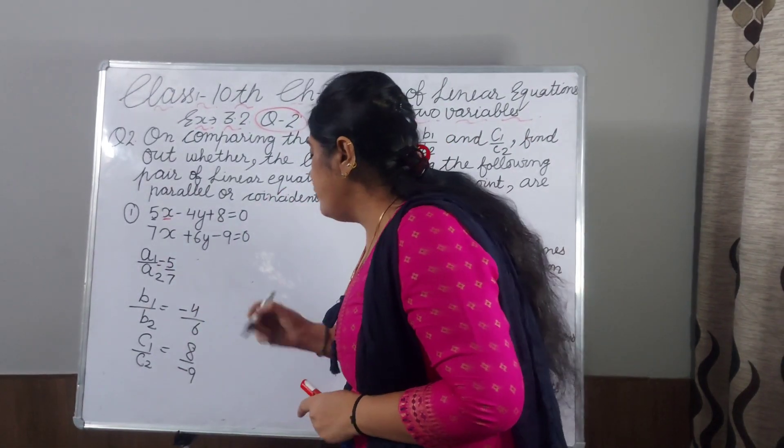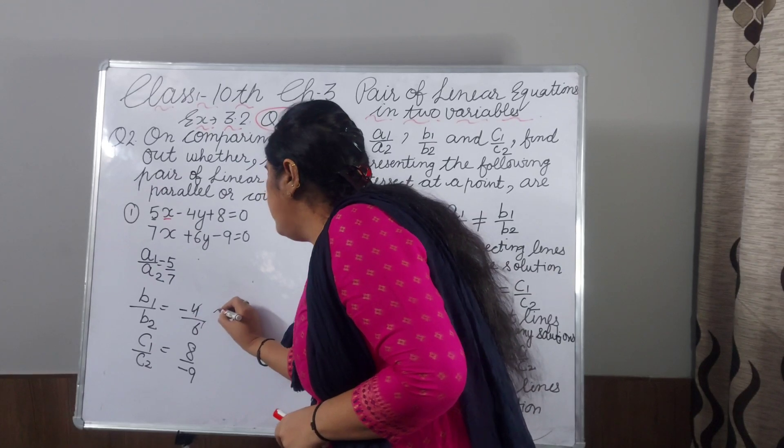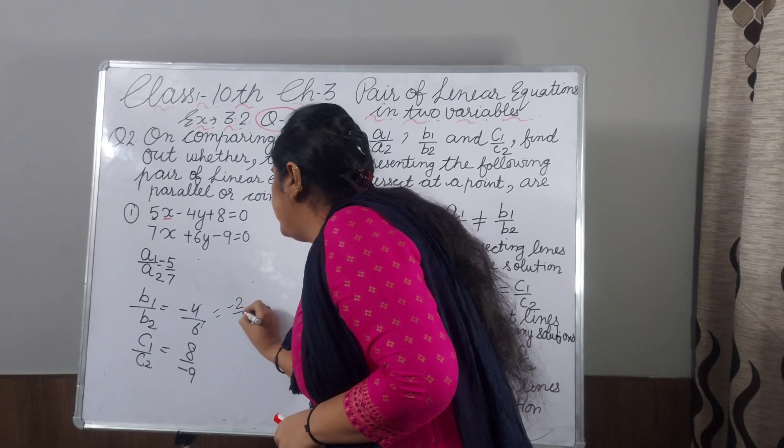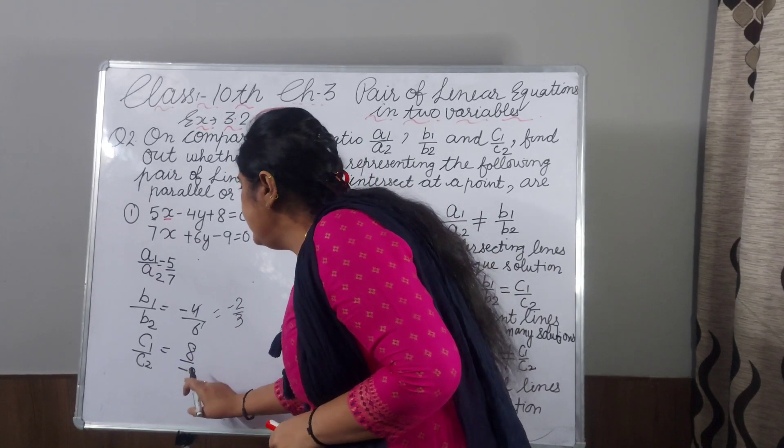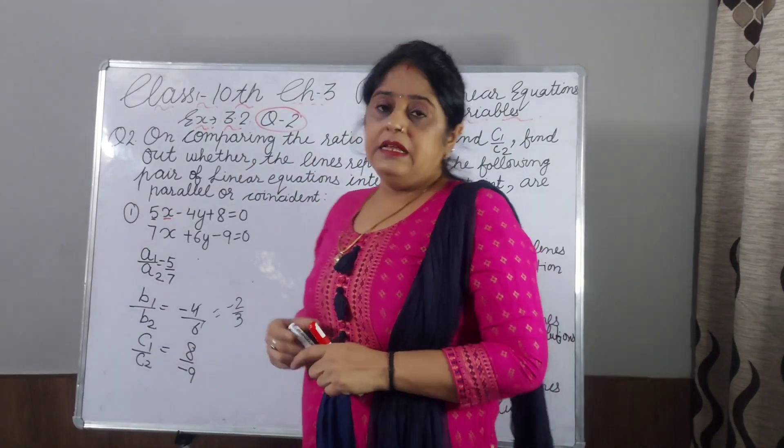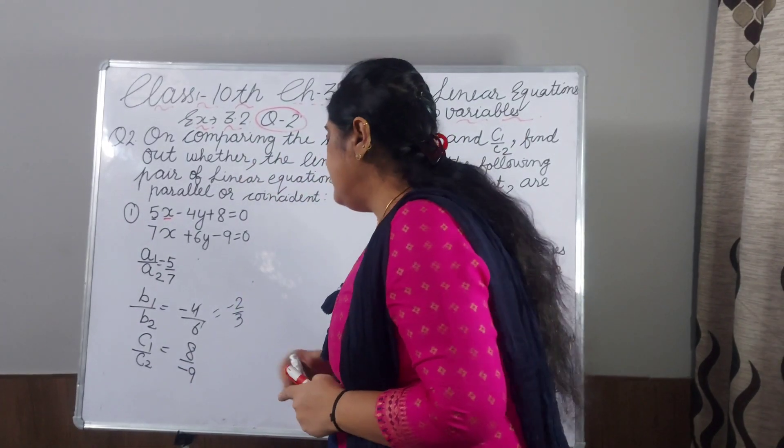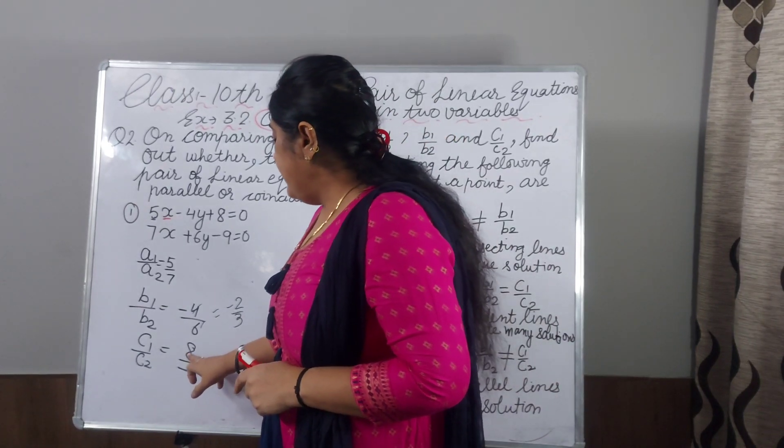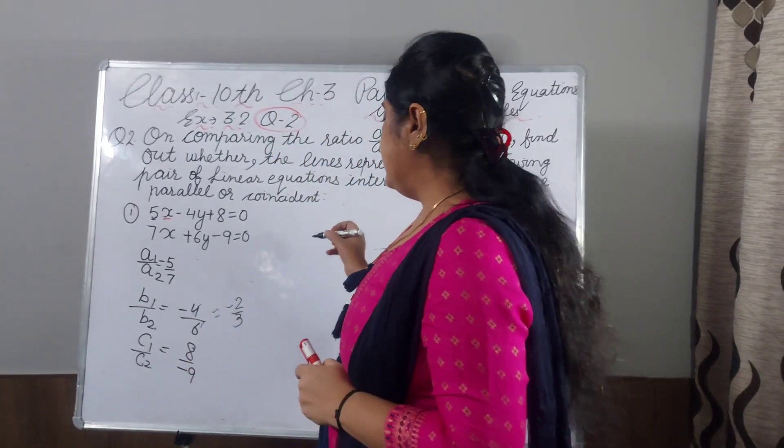So you will write 5 by 7. If there is minus 4 by 6, you cut with the table of 2: minus 2 by 3. And 8 upon minus 9, they are not coming in same table, and it will remain same: 8 upon minus 9.